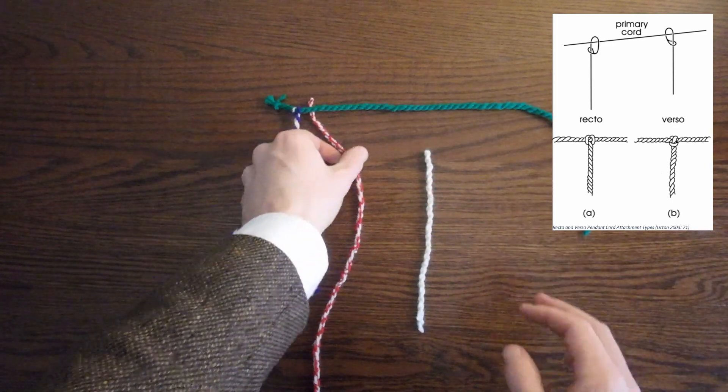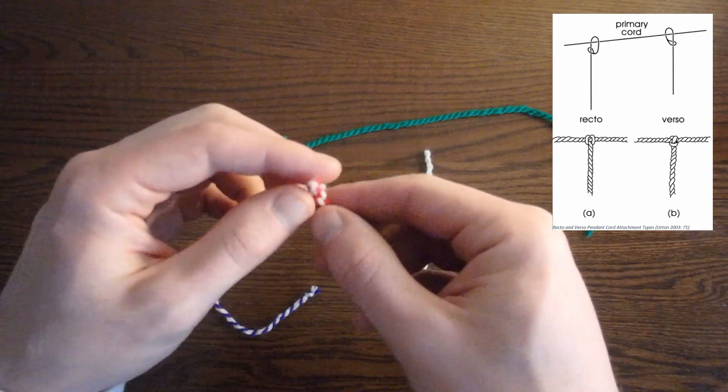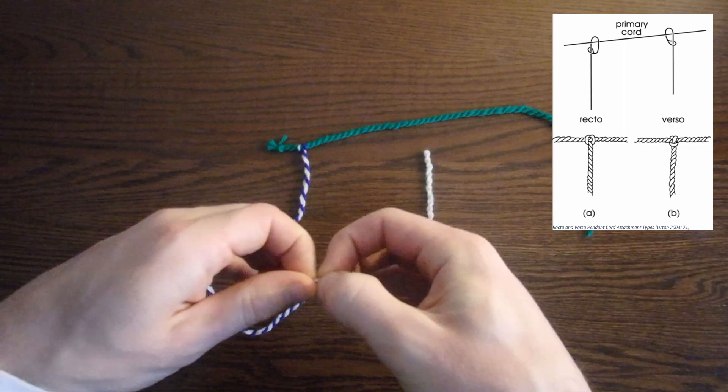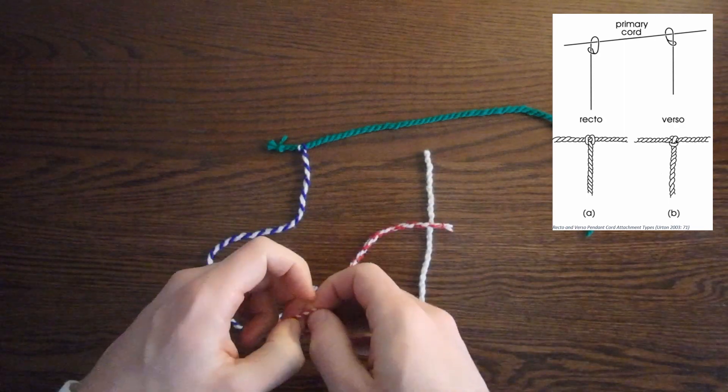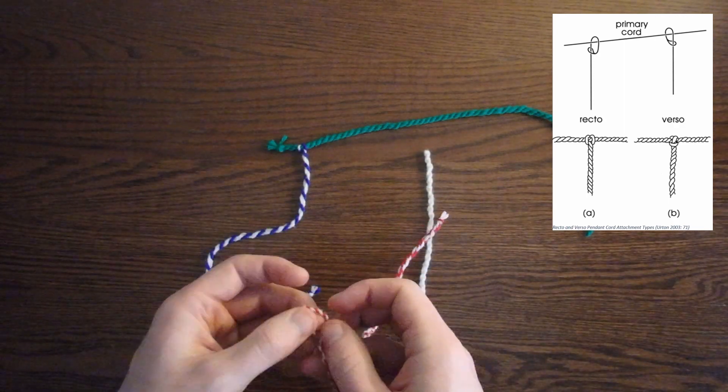Let's attach this next pendant cord in the verso direction. If I attach the cord with a loop facing toward me, and the pendant cord on the same side of the primary cord as I am, this is called verso.